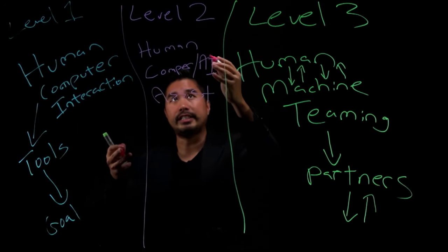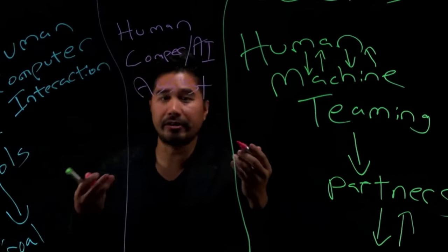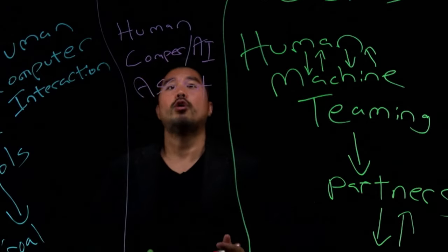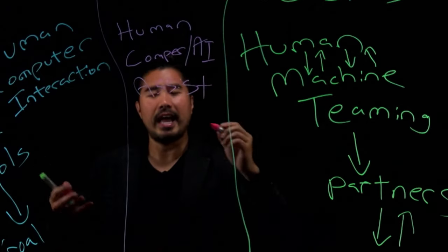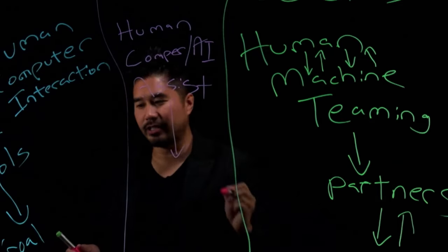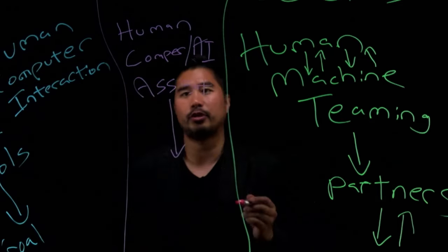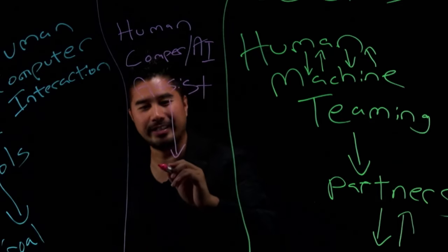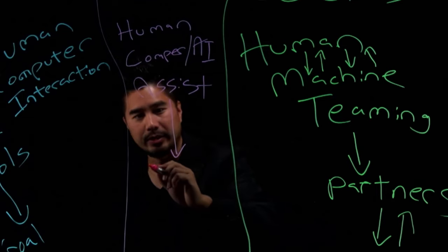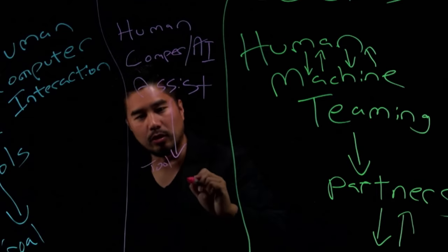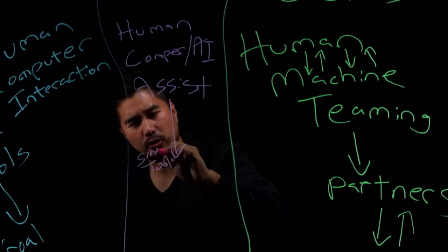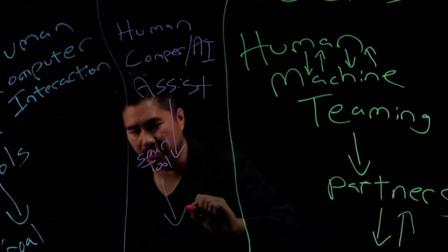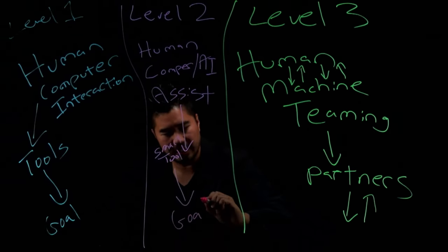Here we see in level two what we experience really today is like, we do a voice command and the assistant finds something on the internet. Usually a Google search or whatever happens and we still use it as a tool, but it's like a smart tool. And this smart tool helps us get to this goal.